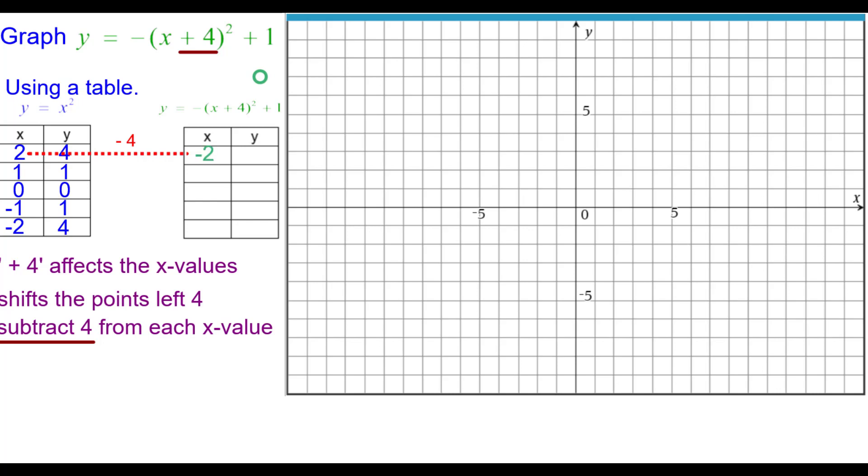So 2 minus 4 would be negative 2. And then we'll just go ahead and subtract 4 from each of those. So I ask you to go ahead and do that. Press pause. Resume when you're ready to check. And you can see here our answer subtracting 4 from each of the x values.